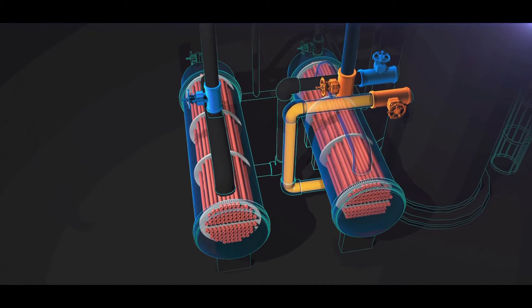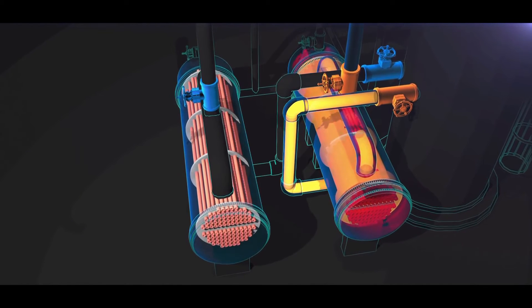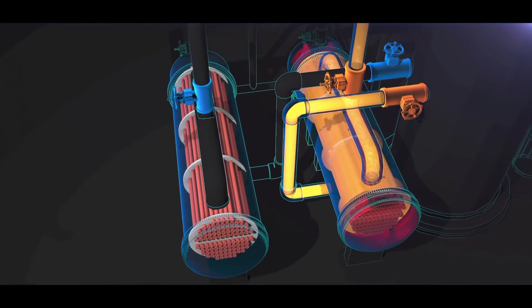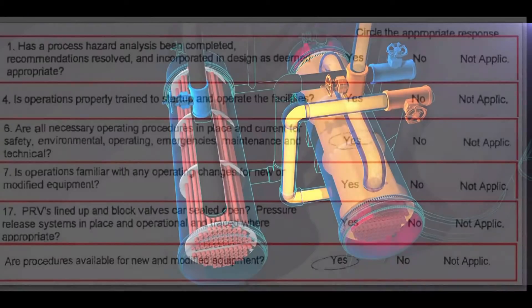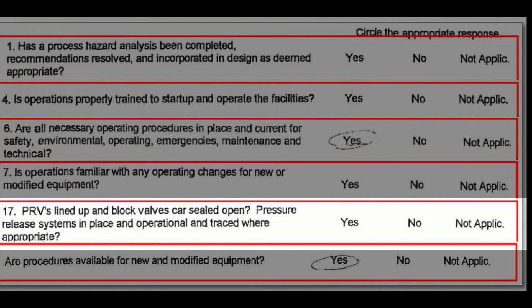But the CSB found that Williams reviewers did not respond to key process safety questions on the form. One of those questions asked, are pressure relief systems in place and operational? That answer was left blank. Even though the pre-startup safety review document was incomplete and there were questions that were not answered, management approved the form. And the end result was these reboilers were put into service without adequate overpressure protection.